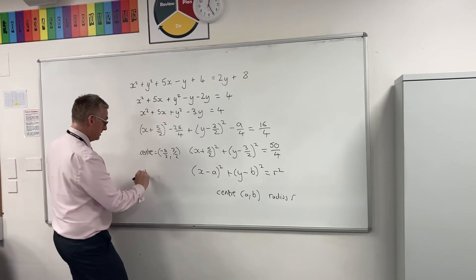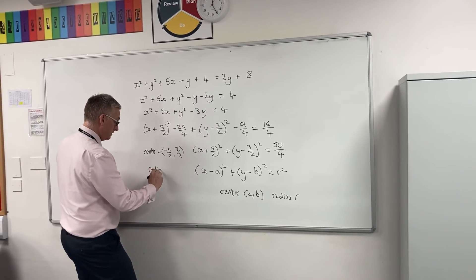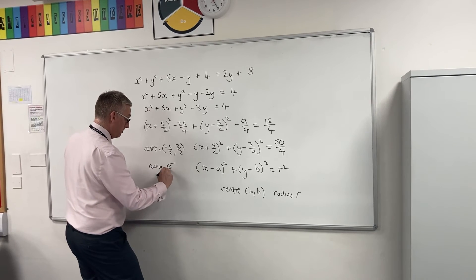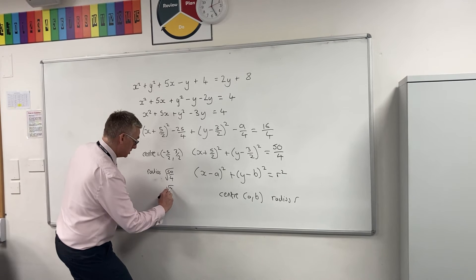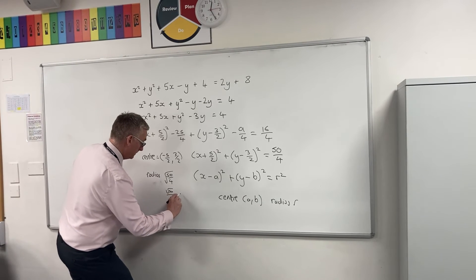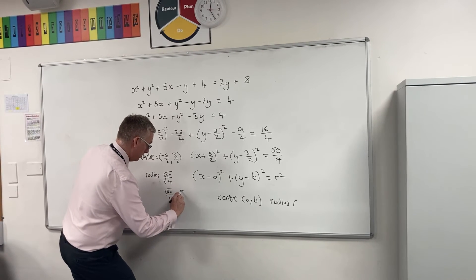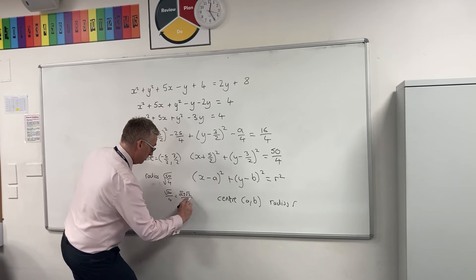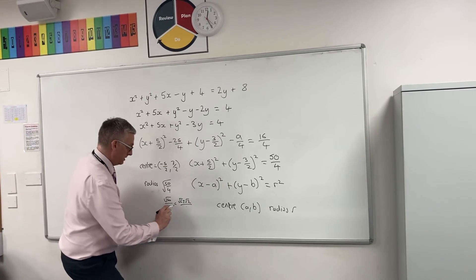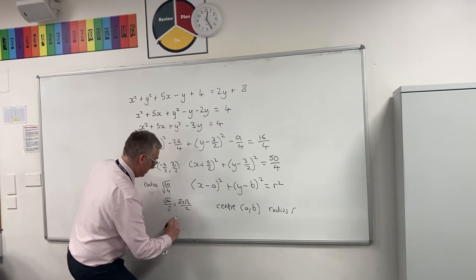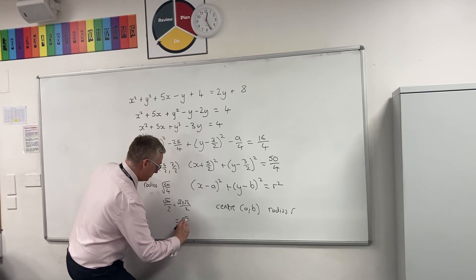Now the radius is the square root of 50 over 4. Well, I can do better than that. Square root of 50 over 4, square root of 25, square root of 2 over 2, which would give me 5 root 2 over 2.